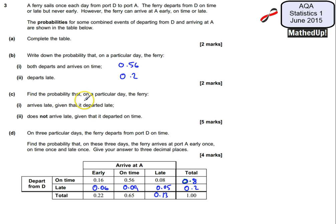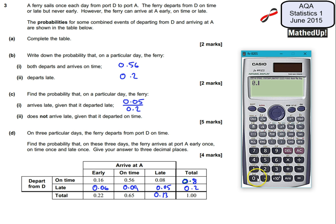Part C says find the probability that on a particular day the ferry arrives late given that it departed late. So we're given that it's departed late which has a probability of 0.2 and if it arrives late that will be 0.05 out of 0.2. So I'm going to have 0.05 divided by 0.2 and that's going to give me the probability that it arrives late given that it's departed late. And that gives us 0.25.